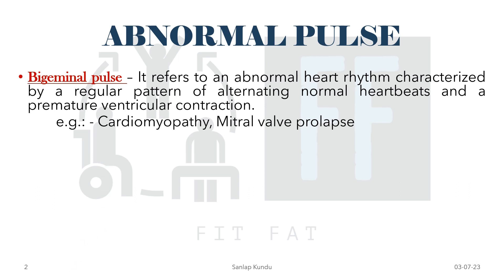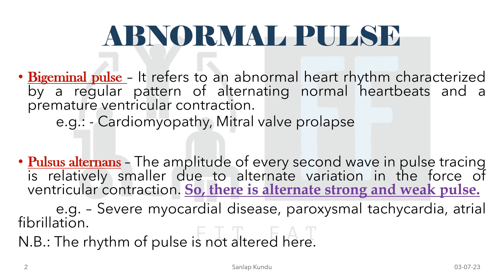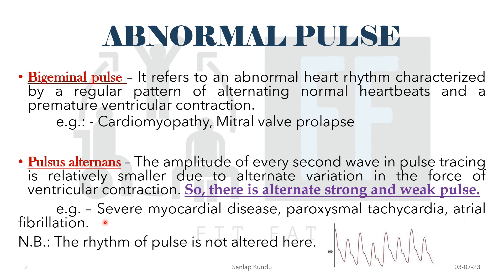The second abnormal pulse is pulsus alternans. In this case, the amplitude of every second wave in the pulse tracing is relatively smaller due to alternate variation in the force of ventricular contraction — so there is alternating strong and weak pulse. It is seen in severe myocardial disease, paroxysmal tachycardia, atrial fibrillation, and other serious cardiac diseases.